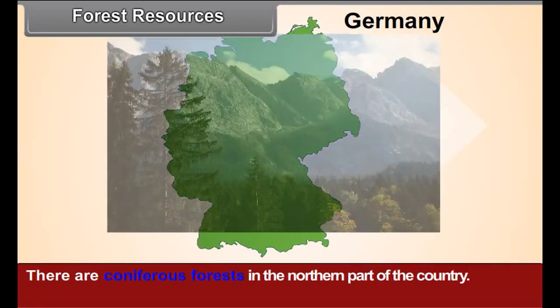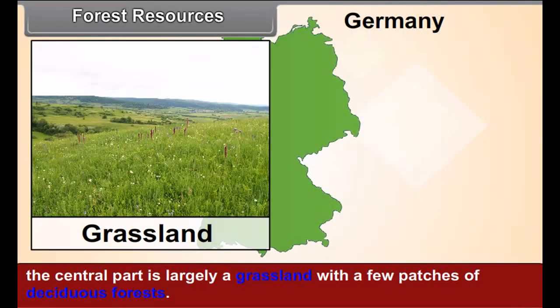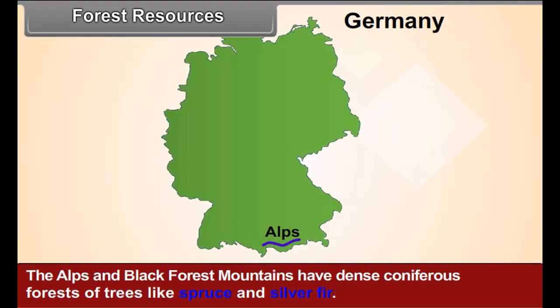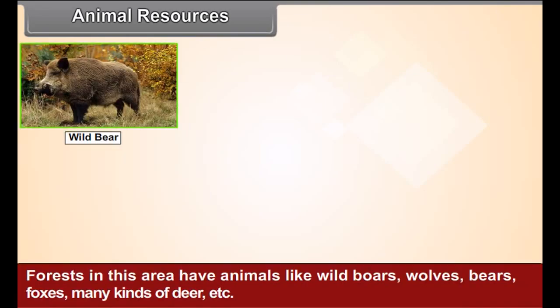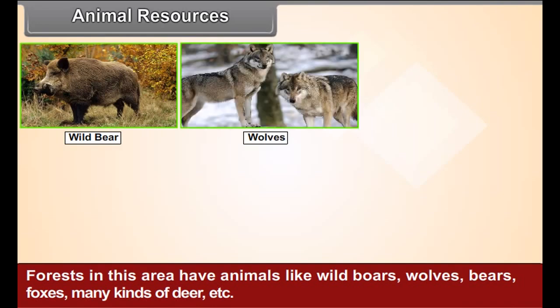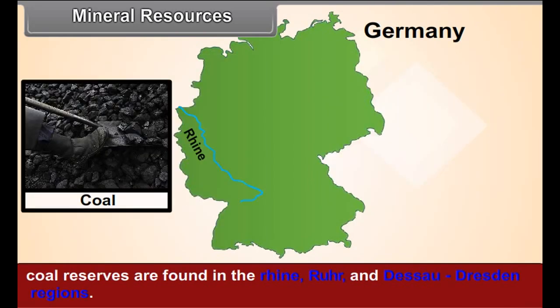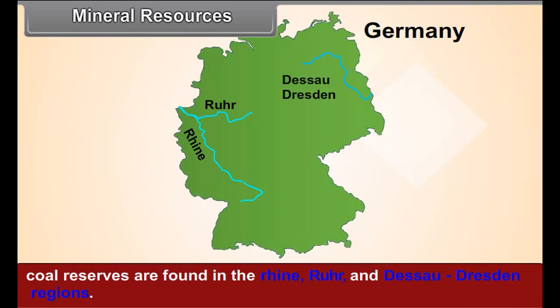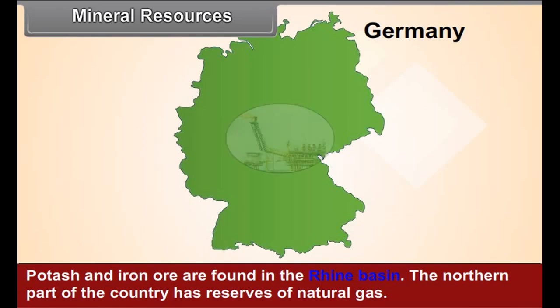There are coniferous forests in the northern part; the central part is largely grassland with a few patches of deciduous forests. The Alps and Black Forest mountains have dense coniferous forests of trees like spruce and silver fir. Forests in this area have animals like wild boars, wolves, bears, foxes, and many kinds of deer. Germany is a leading producer of potash and coal. Coal reserves are found in the Rhine-Ruhr and Saar-Dresden regions. Potash and iron ore are found in the Rhine basin, and the northern part has reserves of natural gas.